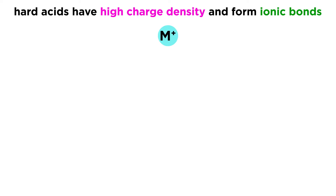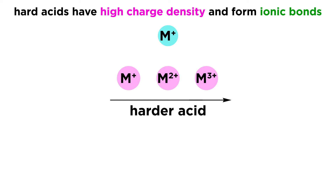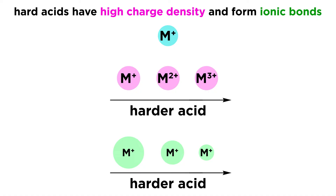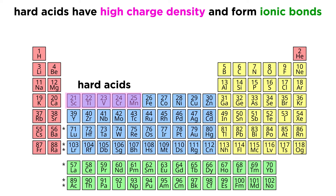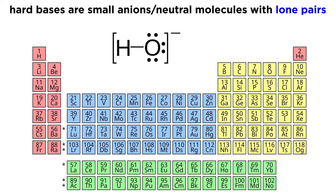Hard acids have a high charge density and form bonds that are more ionic in nature. The greater the charge on a metal ion, the harder it is, and the smaller the radius of the metal ion, the harder it is. Early transition metals with valence electrons in the 3d subshell are hard acids.